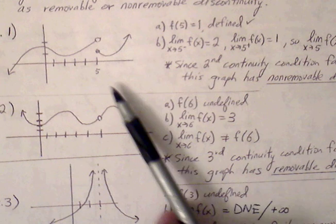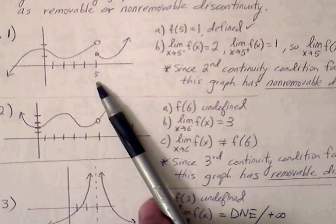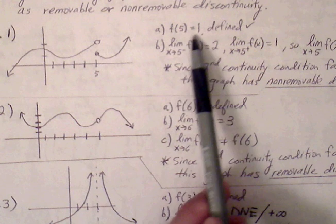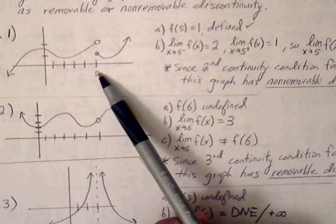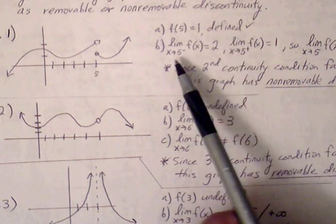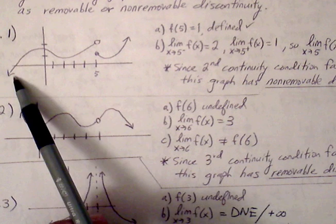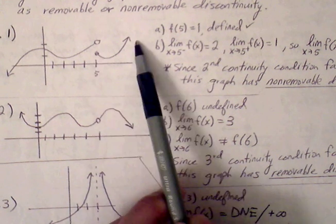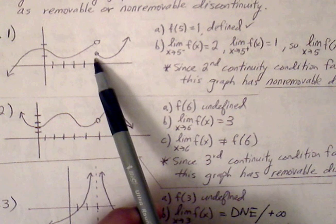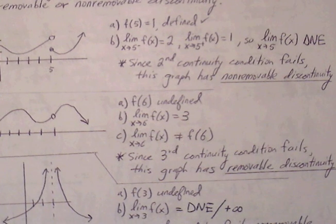Example 1: target x value is at 5. First condition — f of 5 equals 1, so the ordered pair exists; passes. Second condition — testing one-sided limits: approaching 5 from the left gives 2, from the right gives 1. These do not agree, so the limit does not exist. Since the second condition fails, this graph has non-removable discontinuity.